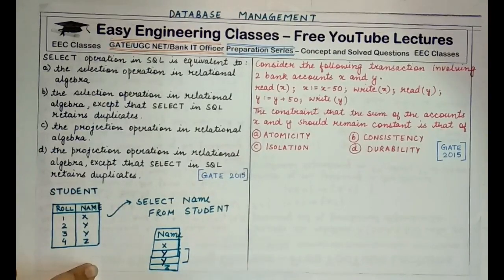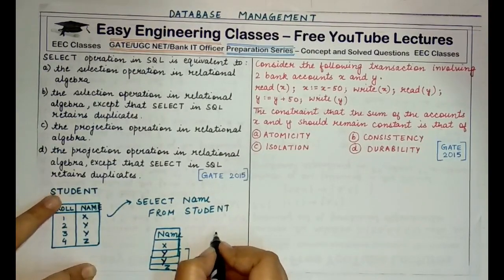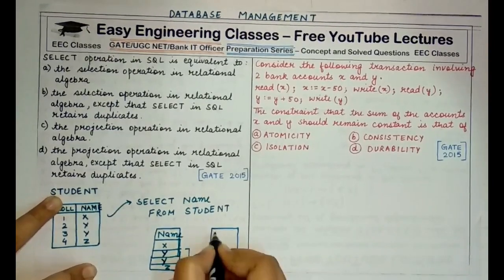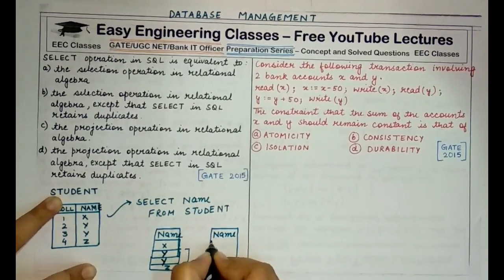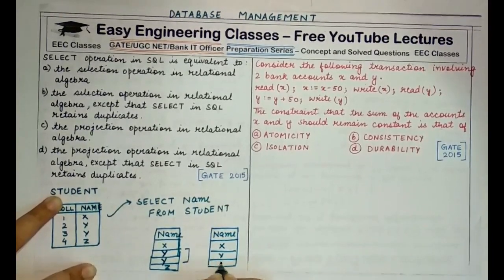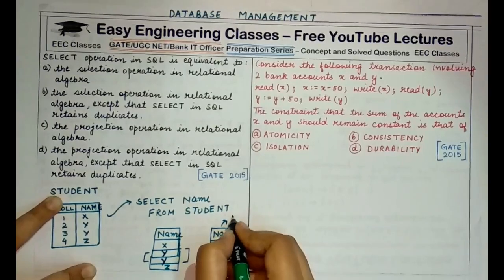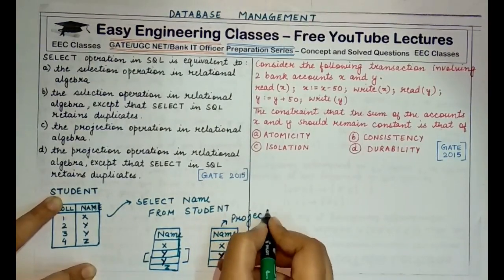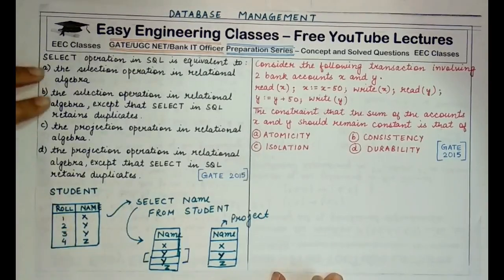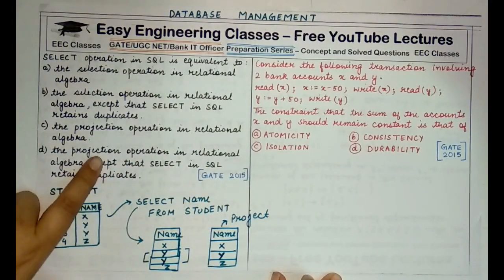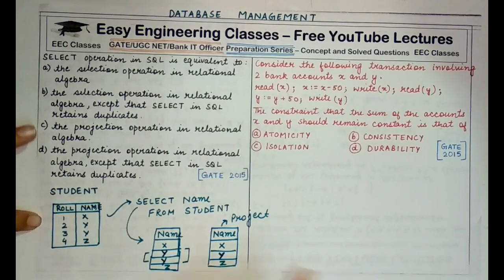With roll numbers 1, 2, 3, 4 and names X, Y, Y, Z — applying SELECT name FROM student returns X, Y, Y, Z — all four rows are retained. But applying the project operator returns only X, Y, Z — it removes the duplicate Y and returns just three rows. So project eliminates duplicates while select retains them.